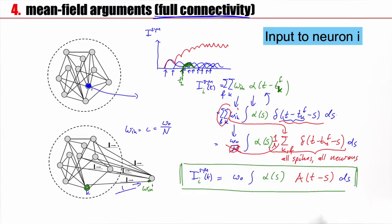It's worth discussing this a little bit. First observation: I have an index i here on the left-hand side, but there is no index on the right-hand side. The index i has disappeared. Therefore, the synaptic input current into neuron i is the same for neuron i equal 10 or neuron i equal 25 or neuron i equal 3346. It's independent of i. The current is the same for all neurons.